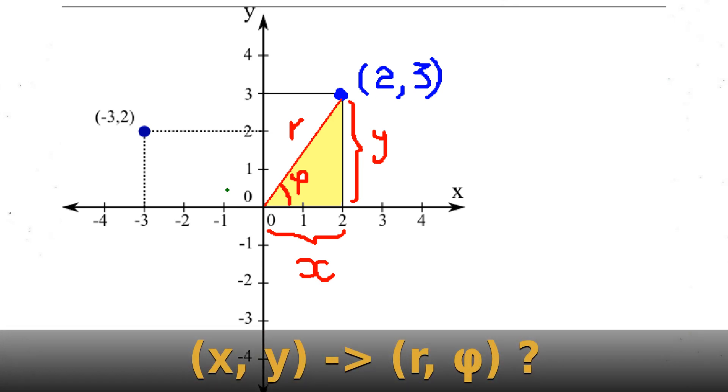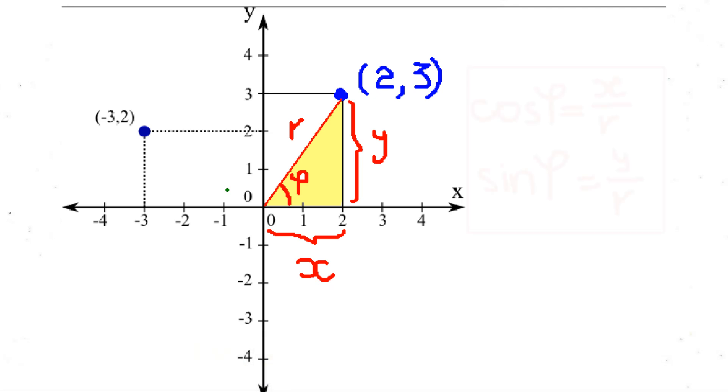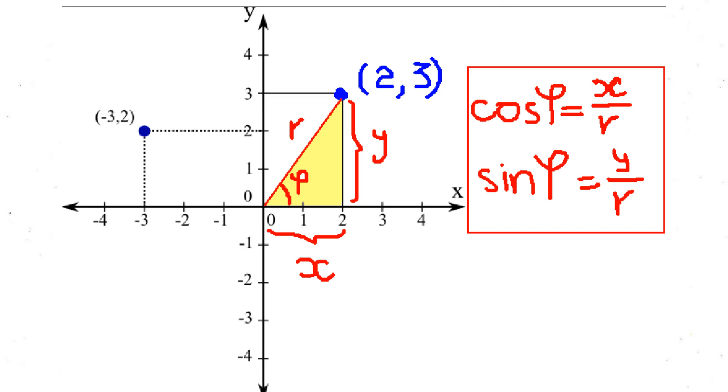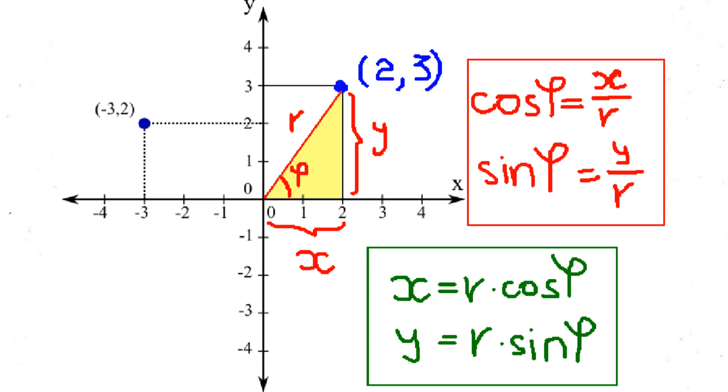Do you see how a pair of x and y is related to a pair of r and phi? Well, the relation is straightforward. The cosine of phi equals x divided by r, and the sine of phi is equal to y divided by r. The latter implies the equations in the green box.